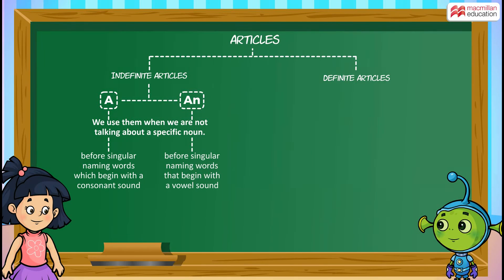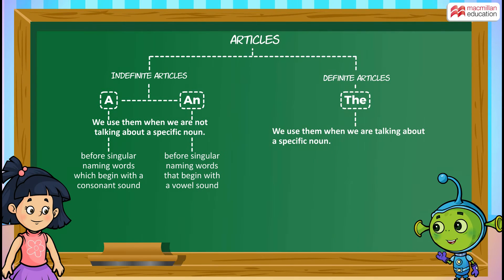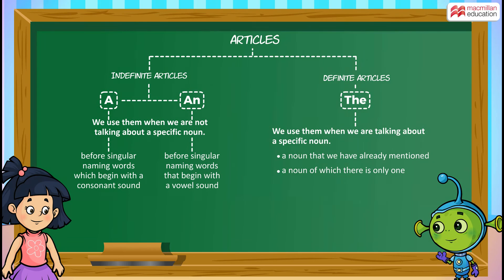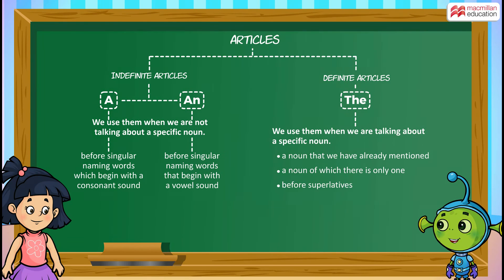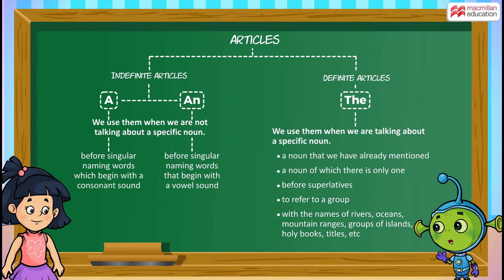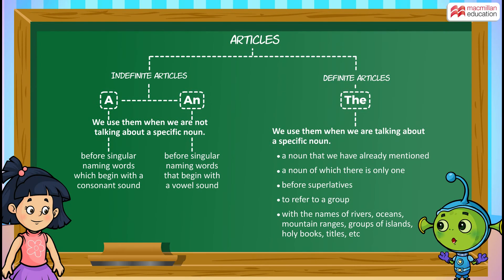The definite article the is used to talk about a specific noun — a noun that we have already mentioned, a noun of which there is only one. Before superlatives, to refer to a group, and with the names of rivers, oceans, mountain ranges, groups of islands, holy books, titles, etc. Now use them again to practice on your website.